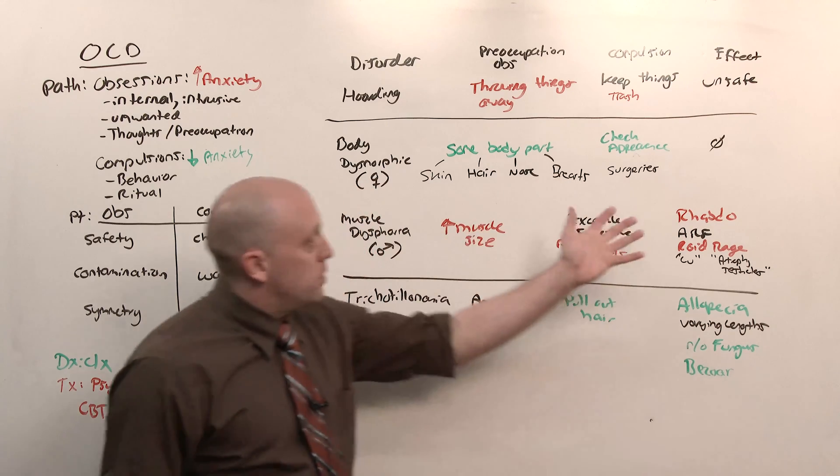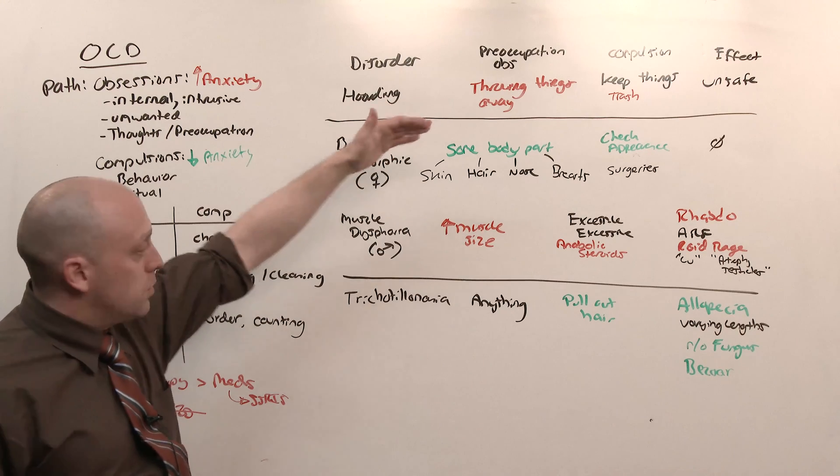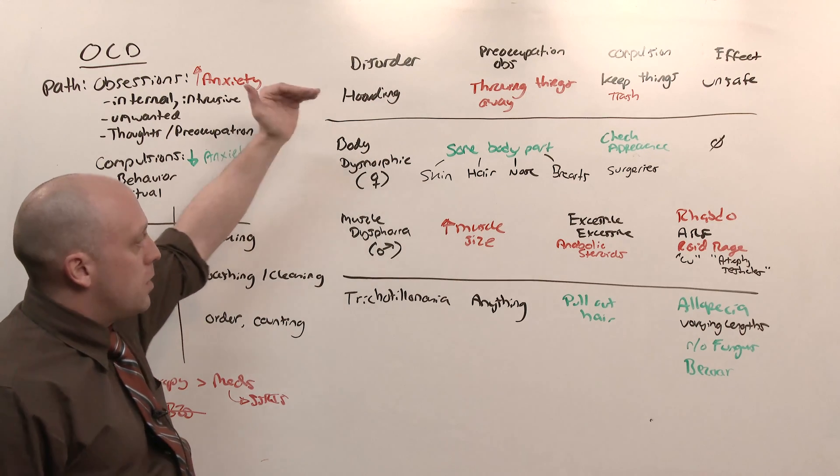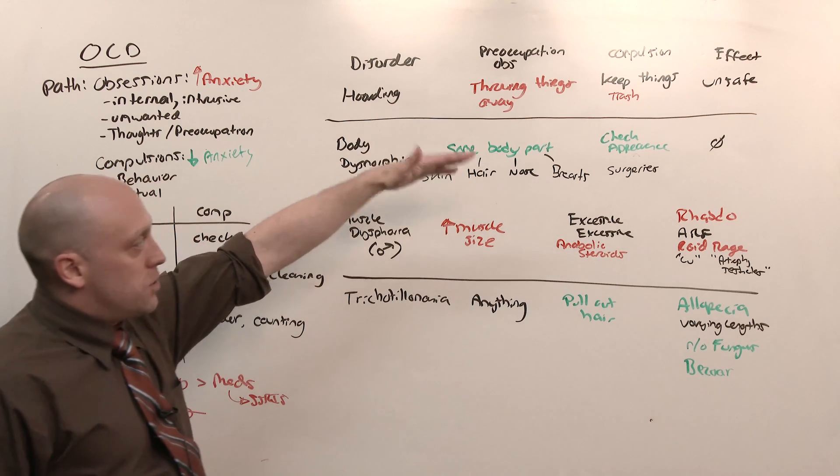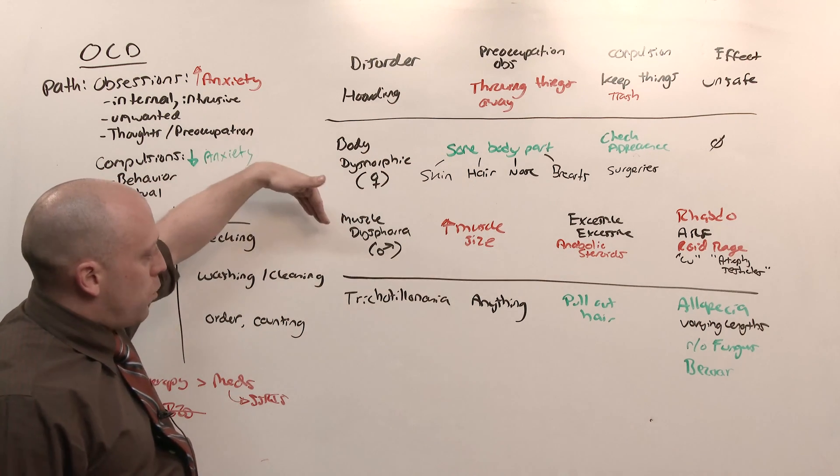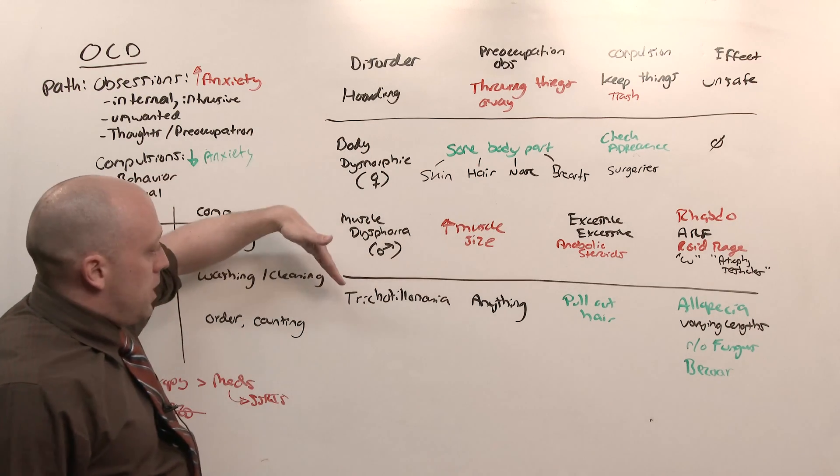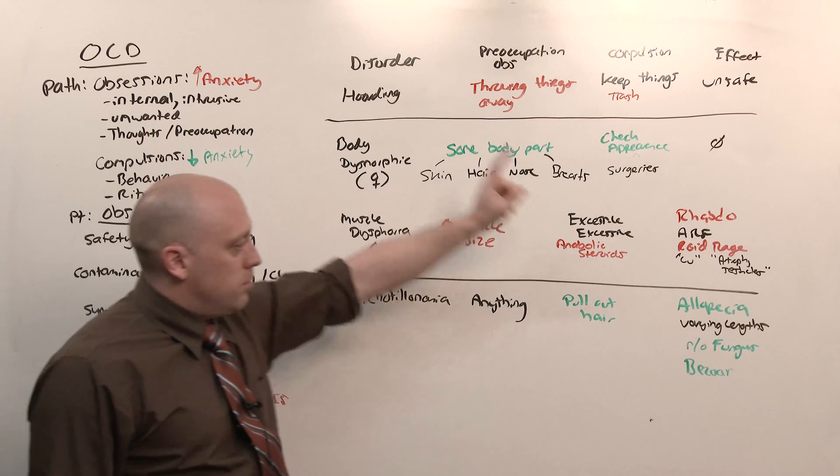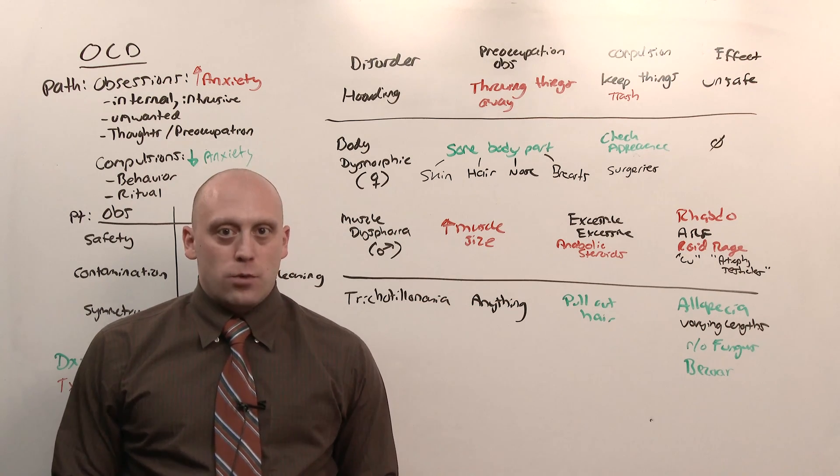Then be able to separate out the different disorders that are related to OCD. Hoarding is giving a bunch of stuff in your house. Body dysmorphic disorder is preoccupation with one body part being ugly, even though it's not, leading to checking of appearances. Muscle dysphoria, dudes who use steroids to get swole. And trichotillomania, women who pull out their hair. Alopecia in varying lengths. That is OCD and its related disorders.